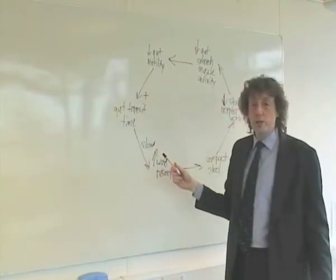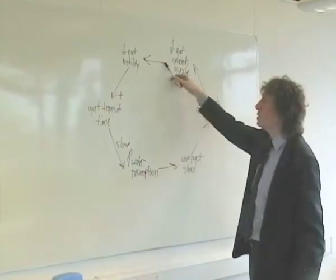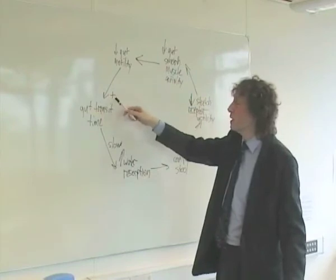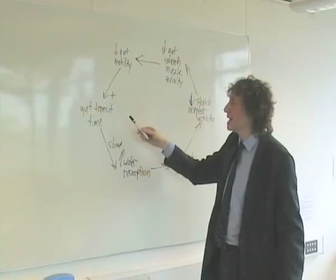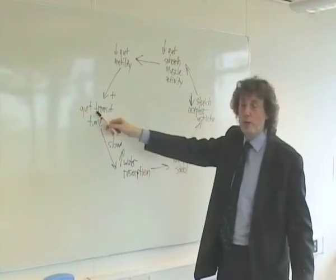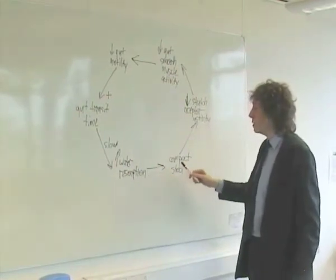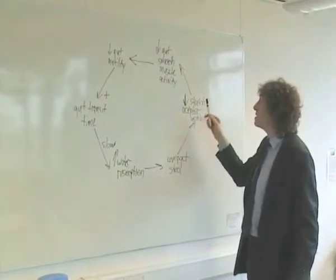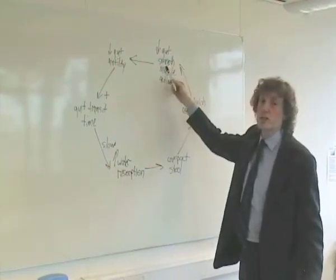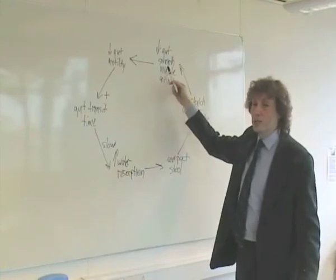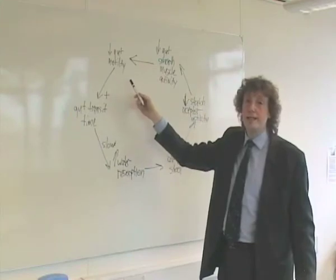In order for that to work as an answer on the exam, you must have a complete circle — it must circle back to the initial condition. You must draw a positive sign to show that this is a positive feedback loop. You should be able to see that you go from gut transit time, through increased water resorption, to compact stool, which leads to the sensor — a decrease in stretch receptor activity — then the effector, which is a decrease in gut-smooth muscle activity, and finally the ultimate physical result: a decrease in gut motility.